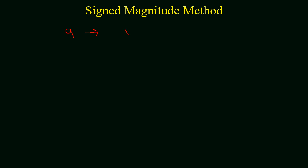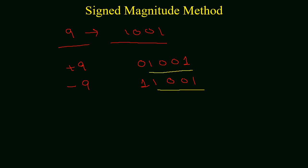Now we will consider a few examples. For unsigned binary, the number 9 is represented as 1001. Using the sign magnitude method, positive 9 will be indicated as 01001, and minus 9 will be indicated as 11001. The binary of 9 remains the same — 1001 in both cases — but the sign bit changes: if the sign bit is 0 the number is +9, and if the sign bit is 1 the number is -9.